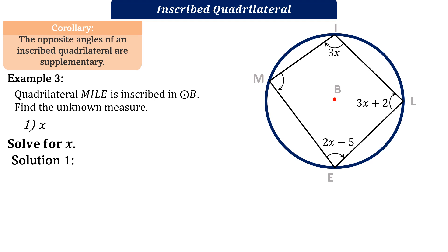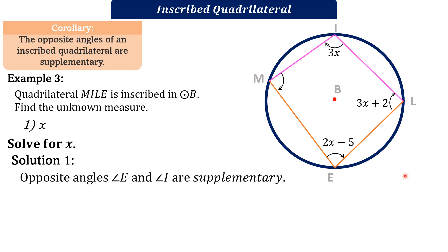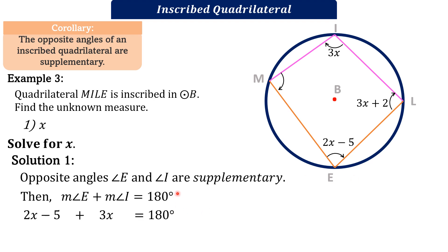Let's solve number 1, solve for X. I will be showing you two solutions. The first one is by applying the corollary that the opposite angles of an inscribed quadrilateral are supplementary. Angle E and angle I are opposite, therefore they are supplementary and their sum is equivalent to 180 degrees.